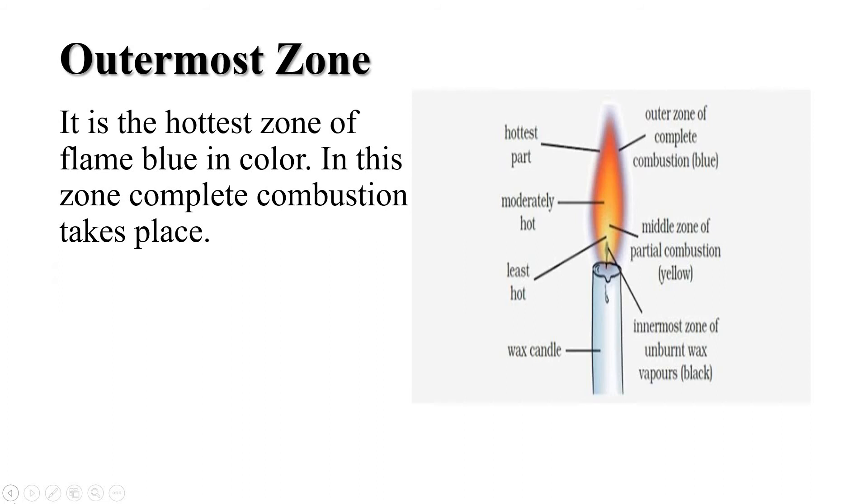First, let us understand about the outermost zone. So students, as I have told you, the outermost zone is a non-luminous zone and in this zone, complete combustion takes place. Students, this zone is faintly visible and surrounds the yellow luminous part of the flame. In this zone, the wax vapor undergoes complete combustion because of plenty of air present around it and this zone is the hottest part of the flame.